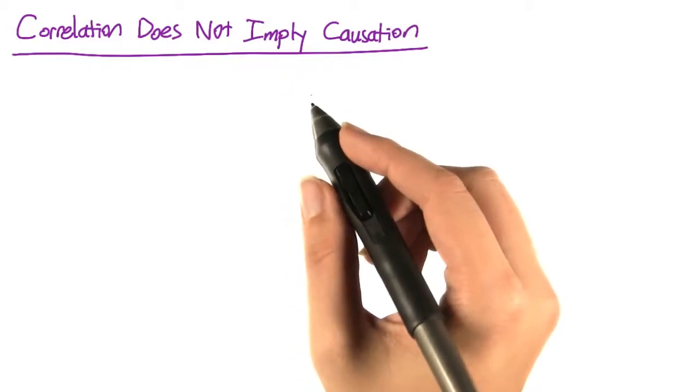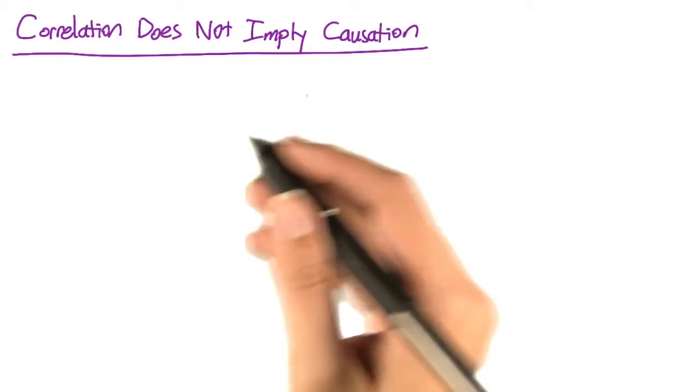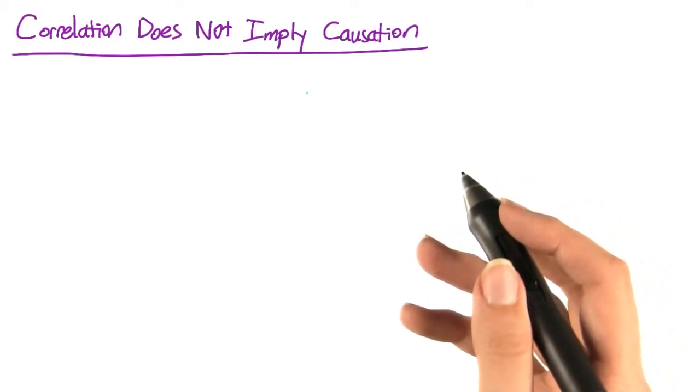Another type of conclusion you might want to be able to draw is to say that if you change one thing, another thing is likely to change also.